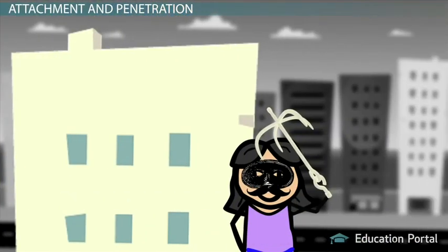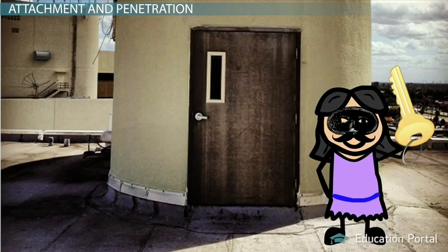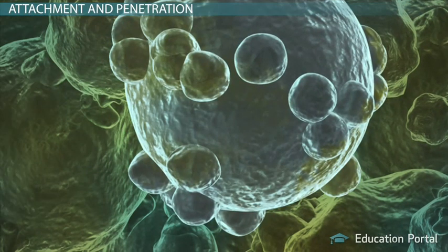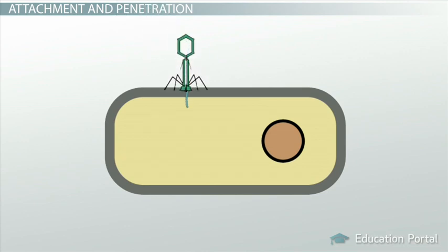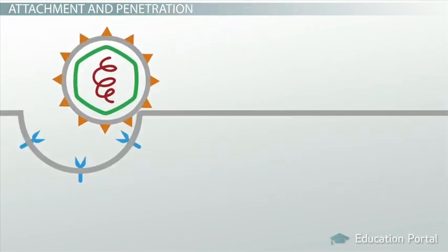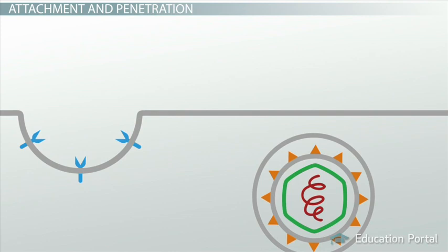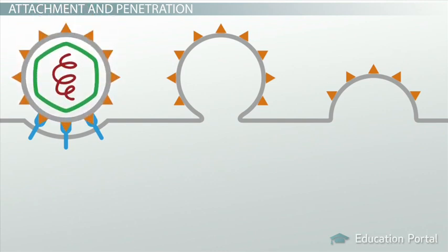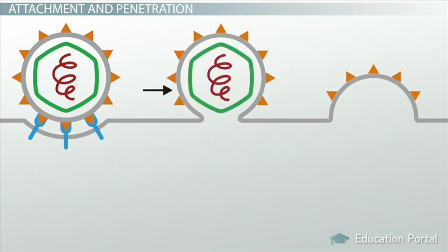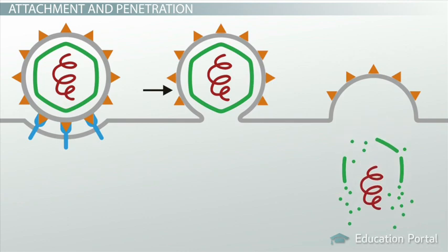Next, we can use the grappling hook we threw onto the roof of the building to climb up and use a stolen key to a door on the roof in order to penetrate inside the lab. Similarly, viruses undergo penetration, the process of entering a host through several mechanisms. Some viruses inject their genomes into the cell by using a needle-and-syringe-type mechanism. Other viruses will actually trick the cell into engulfing the virus into the cell, something called endocytosis. Further still, envelope viruses will undergo a process called membrane fusion, whereby their envelope will fuse with the envelope of the cell, allowing the virus to enter into the cell without any impediment.